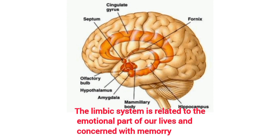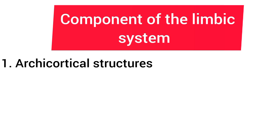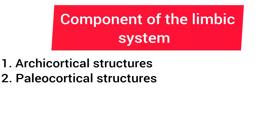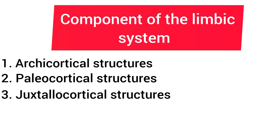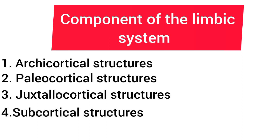The limbic system is primarily related to the emotional part of our life and is extensively concerned with memory. The structures of the limbic system are classified into four groups: number one is the archicortical structures, number two is the paleocortical structures, number three is the juxtallocortical structures, and number four is the subcortical structures.